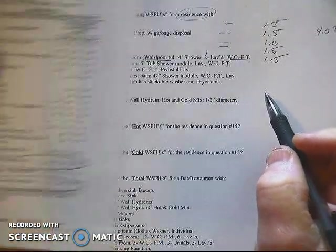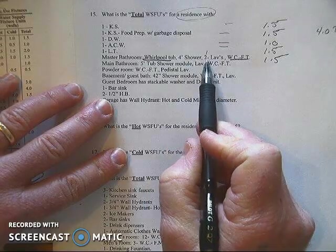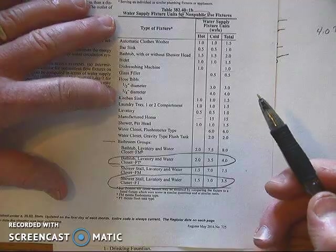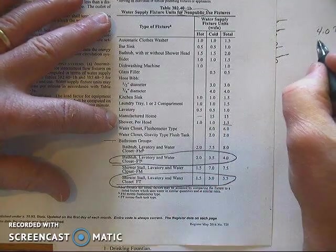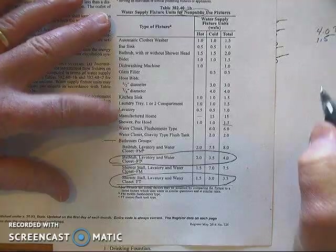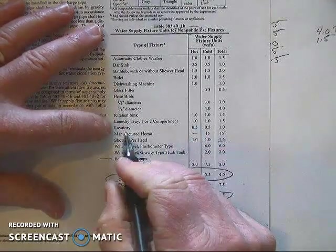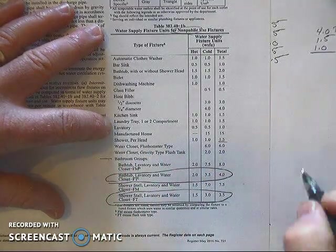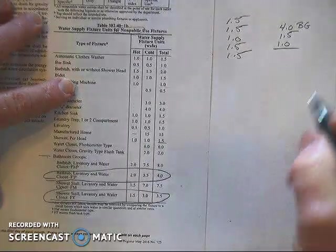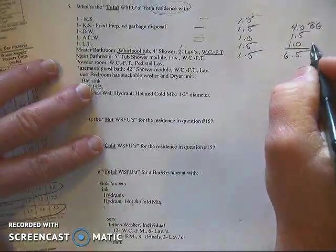And then remember we had an extra shower and we actually have an extra lav. So a shower would be worth 1.5 and a lavatory sink would be another 1 WSFU. And so if we add those all up, we end up with 6.5 WSFU for that master bath.